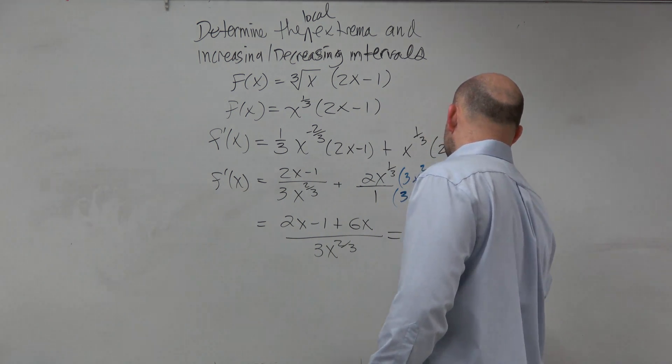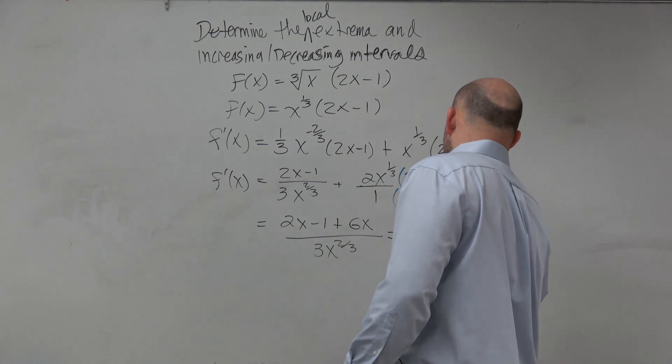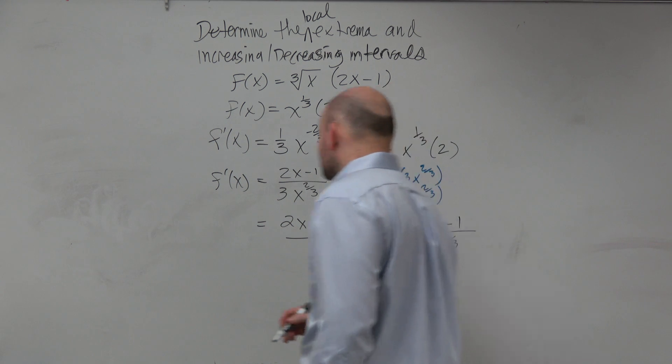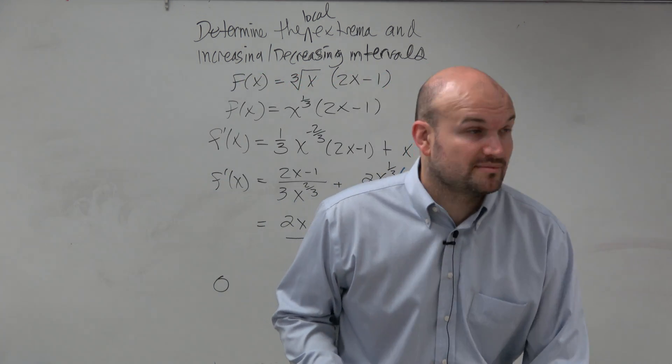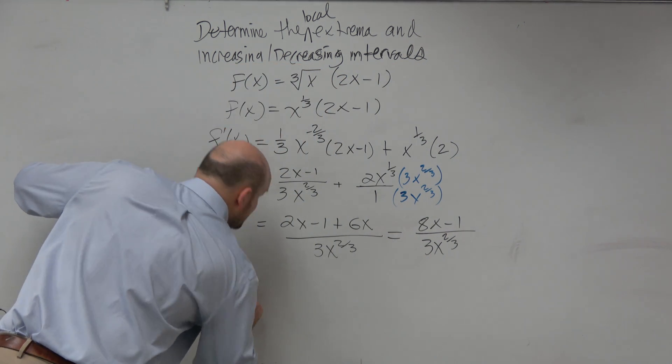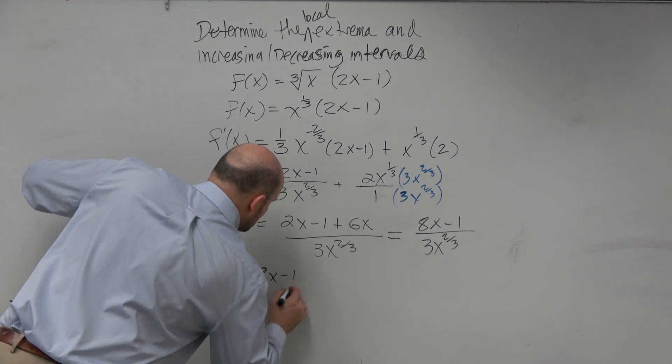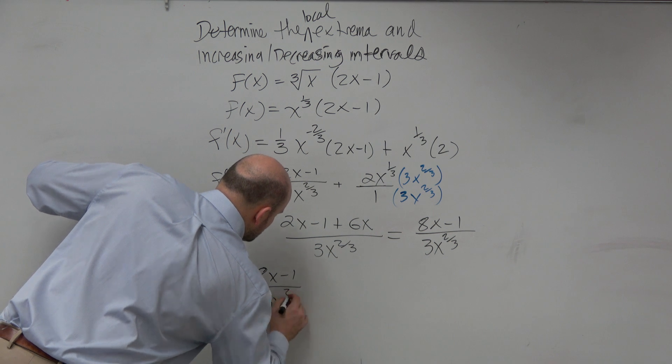And then I can obviously simplify this one more time and just say this is going to be (8x - 1) over (3x^(2/3)). Now, if I want to set my derivative, I've got to find the critical values, right? So I'm going to set my derivative equal to 0.